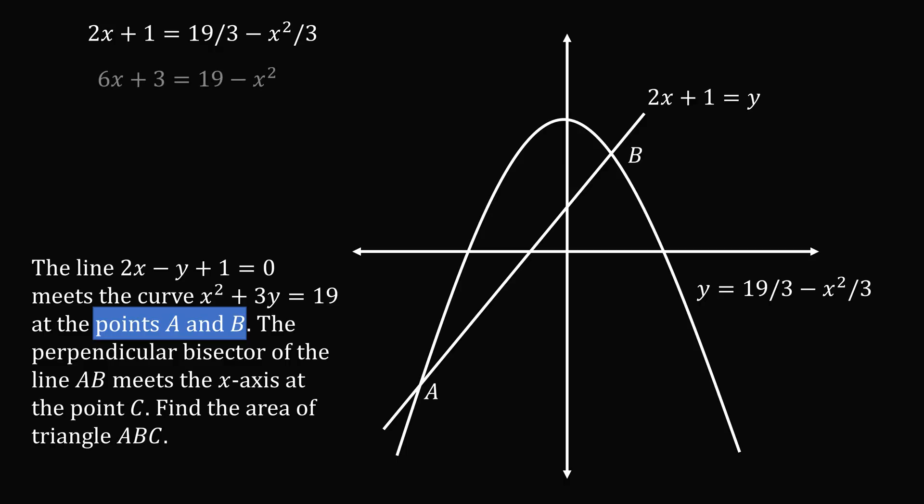We'll multiply both sides of the equation by 3, so we have 6x plus 3 equals 19 minus x squared. Then we'll bring everything over to one side, so we have x squared plus 6x minus 16 equals 0. So we can try to factor this equation, and we will get lucky.